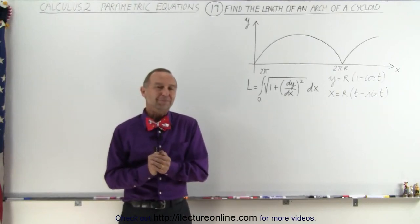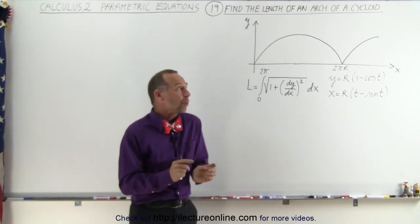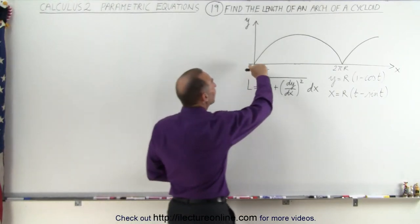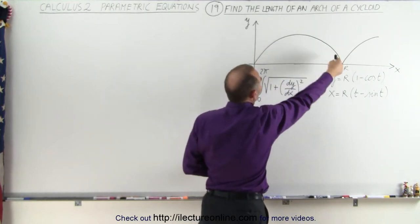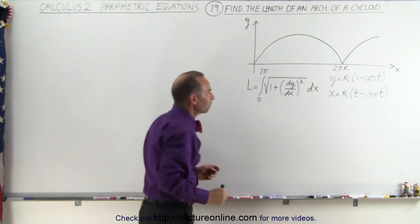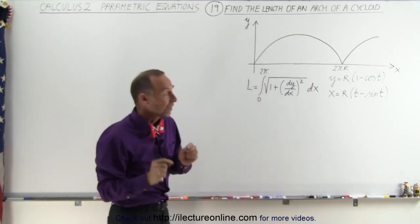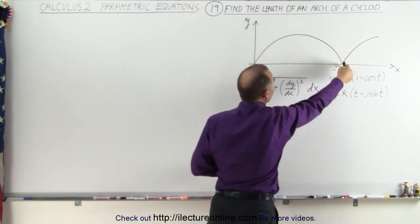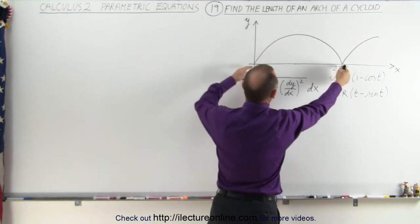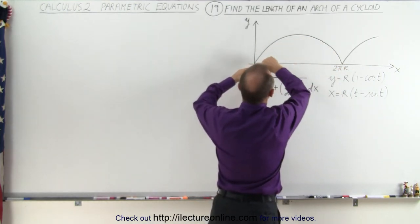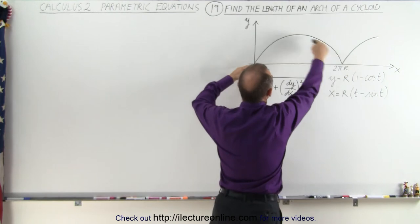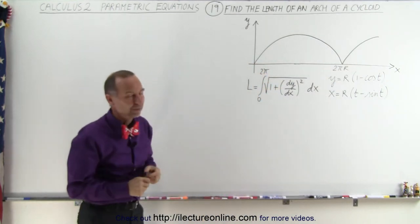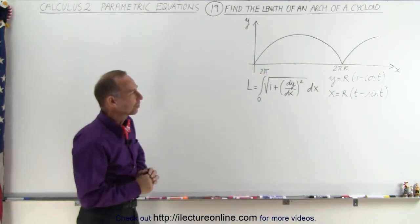Welcome to ElectronLine. In this video, we're going to try to find the length of a single arch of a cycloid. Notice that the distance from the origin to where the cycloid hits the x-axis is 2πr, so the length of the arch should be something greater than 2πr, just as a reference.